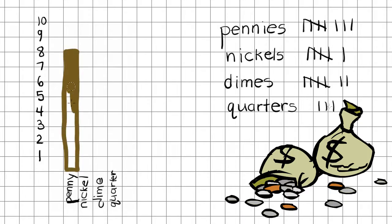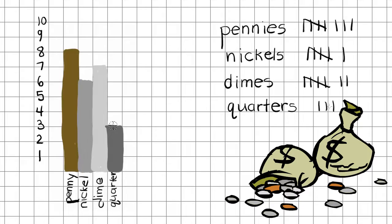You had eight pennies, six nickels, seven dimes, and three quarters. There is another example of making a data bar graph using money.